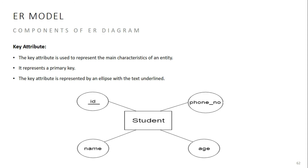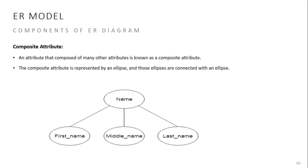Key attributes are also called primary attributes. Composite attributes are attributes that can be divided into sub-parts. For example, the attribute 'name' is a composite attribute — it can be divided into first name, middle name, and last name. Similarly, 'address' is a composite attribute — it can be divided into street, city, region, and zone.